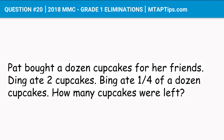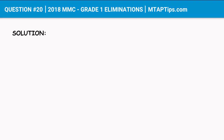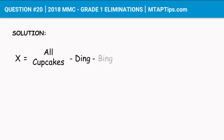Let's go ahead and try to solve this problem. Let's put this in an equation. We have X as the unknown number — the number of cupcakes left — equal to the total number of cupcakes, minus the number of cupcakes that Pat gave to Ding, minus the number of cupcakes that Pat gave to Bing.